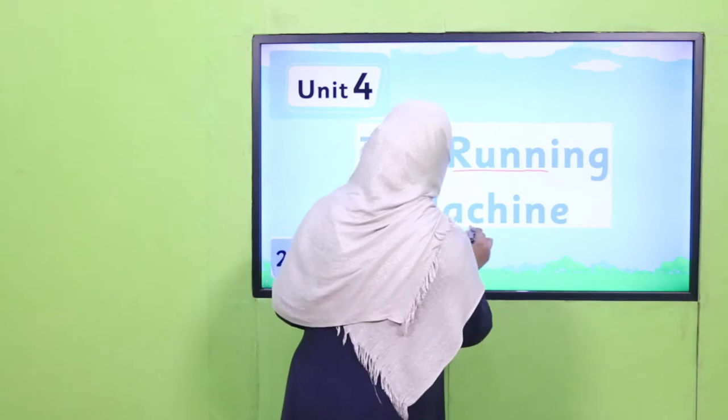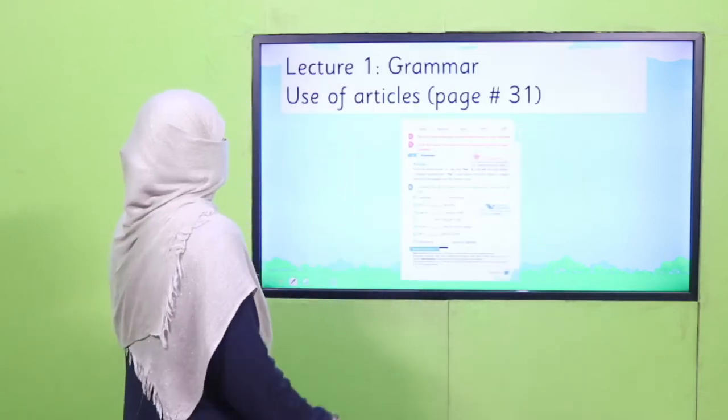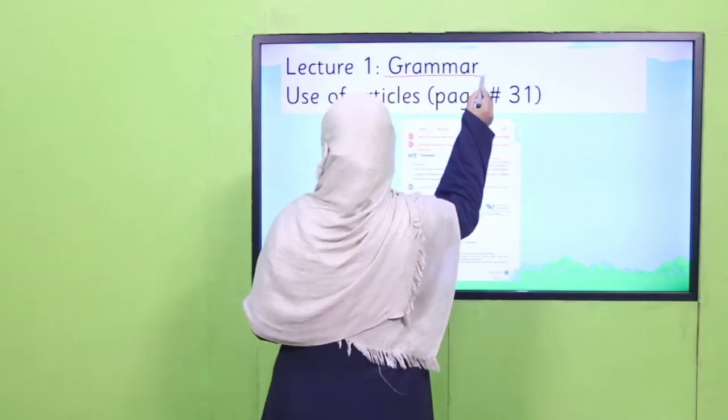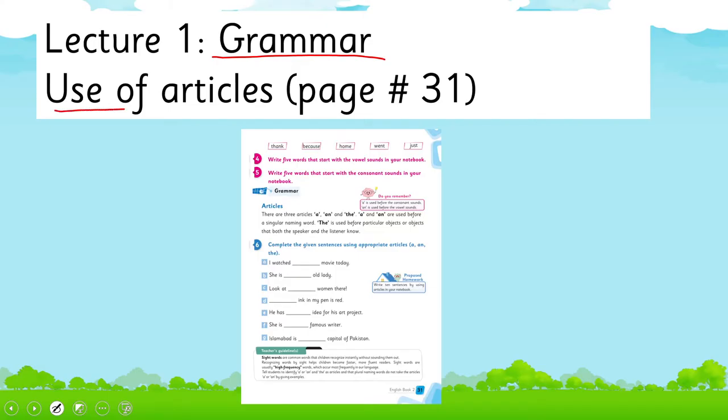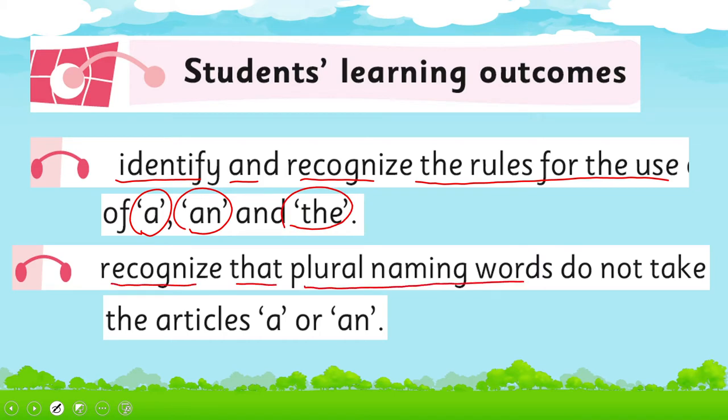I have divided this unit into different lectures. Lecture 1 is about grammar and we will learn to use articles. We'll cover page 31 of your book and the SLO to identify and recognize the rules for the use of a, an, and the, and we'll recognize that plural naming words do not take the articles a or an.